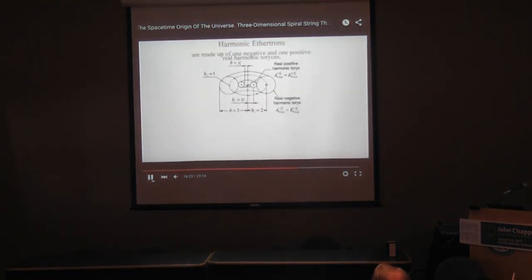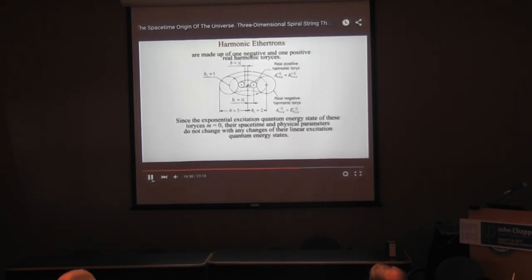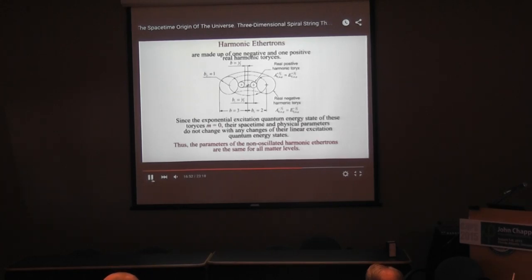Harmonic ethertrons are made up of one negative and one positive real harmonic Torex. Since the exponential excitation quantum energy state M of these Torexes equals 0, their spacetime and physical parameters do not change with any changes of their linear excitation quantum energy states. Thus, the parameters of the non-oscillated harmonic ethertrons are the same for all matter levels.